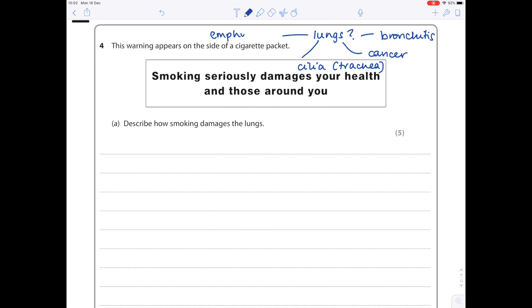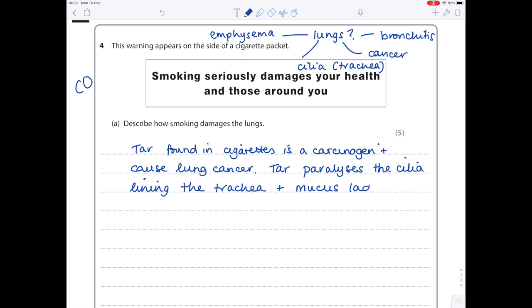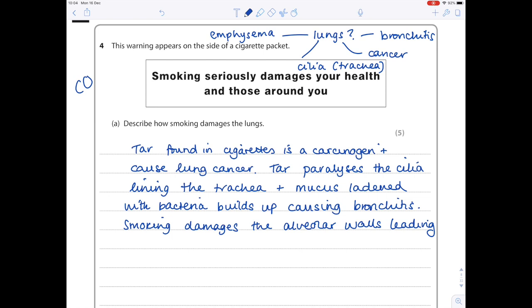These are particularly related to the lungs. Probably not going to talk about carbon monoxide because that's more of a general problem to do with the blood. However, they're not going to mark you down if you randomly include more information or slightly irrelevant information. As I always say to my tutors, just include everything and they'll ignore anything that's excessive or not quite what they're after. Don't not write stuff because sometimes you'll find that stuff you think is irrelevant will be on the mark scheme. So we're going to start forming our answers. Tar found in cigarettes is a carcinogen and causes lung cancer. Next up: tar paralyzes the cilia lining the trachea and mucus laden with bacteria builds up causing bronchitis.